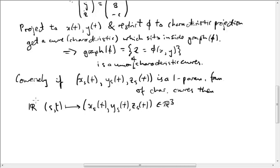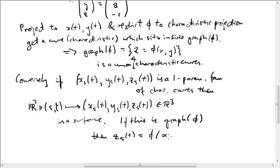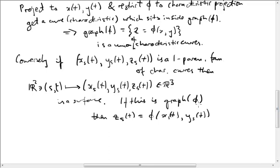So this is a map from R2 to R3, so it gives us a surface. And if this surface is a graph, say it's the graph of some function phi, well, that means that z s of t is a function of x s of t, y s of t, then the conclusion is that this function phi solves star. Solves our original PDE star. And how do we see this?